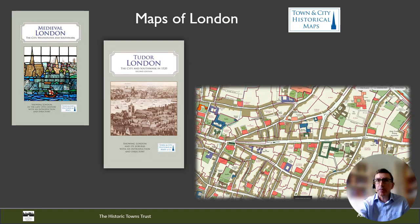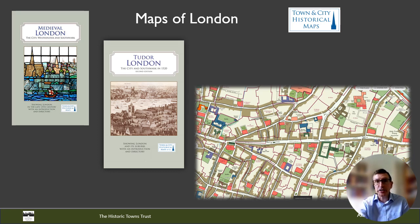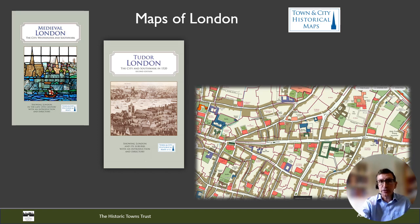The Historic Towns Trust researches and publishes atlases for some of the UK's major historic towns. In recent years, we've also published folding sheet maps of some of these towns and cities. For London, we actually have two maps, both of which have proved very popular. One covers the City of London as it was in the medieval period around 1300. The other focuses on the Tudor period, showing London as it was in about 1520. Maps like these are extremely helpful in understanding the development of towns and cities, and what we wanted to do was to find other ways to make them useful by putting them online and allowing people to browse and explore them.